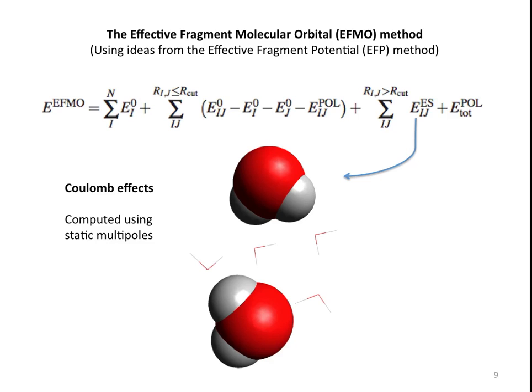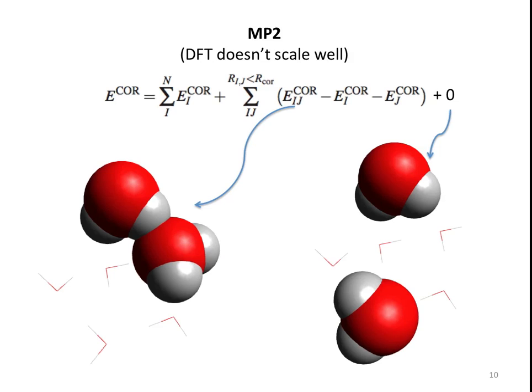That was for Hartree-Fock. To get MP2, the current implementation—and as I said, this is a work in progress—we calculate the correlation energy, MP2 correlation energy. Again, for closed dimers, we do an MP2 calculation and get the correlation energy. If these are far apart, then we set it to zero. And that's actually in straight MP2 FMO implementation. There are cutoffs for what is close and what is far away, and you can adjust that by comparing with regular MP2 calculations.